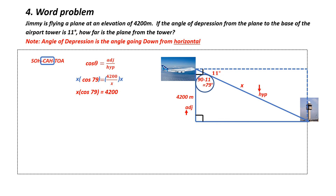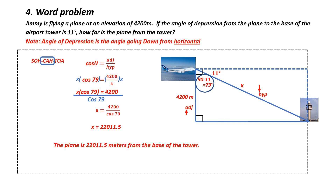x is not isolated, so I've got to get rid of cos of 79. x is being multiplied by cos of 79, so I'm going to divide both sides by cos of 79 degrees. This means that cos of 79 and cos of 79 are going to cancel. Therefore x is now isolated, and on the other side I've got 4,200 divided by the cos of 79 degrees. Punching this into an on-screen calculator: 4,200 divided by the cos of 79 degrees, giving me an answer of 22,011.5 meters. Don't forget, this is a word problem, so it needs a word answer: the plane is 22,011.5 meters from the base of the tower.